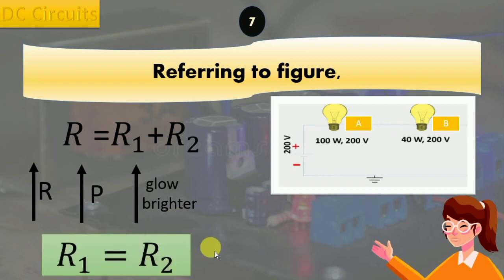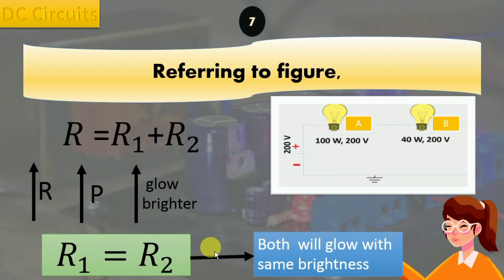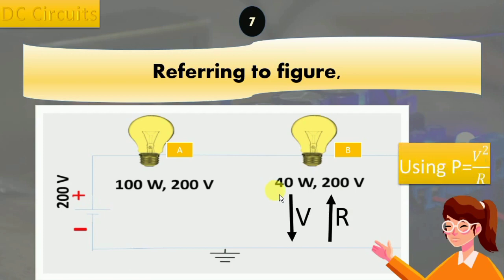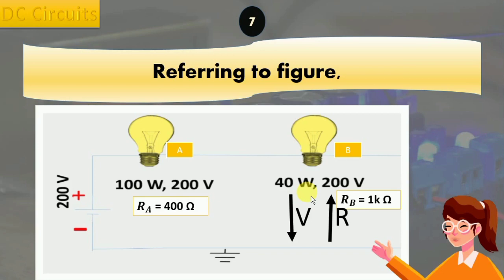In this case, the 40 watt bulb has a lower wattage rating, which indicates that it has a higher resistance than the 100 watt bulb, which is 1 kilo ohm. The resistance of the 100 watt bulb is 400 ohms, which is lower than the 40 watt bulb. Here I have only shown calculated values.